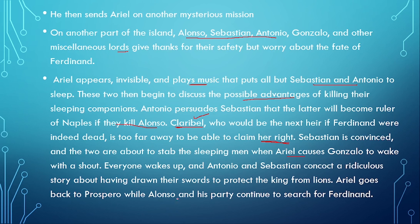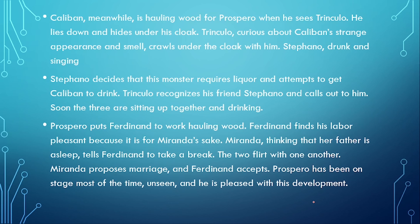Ariel goes back to Prospero, while Alonzo and his party continue to search for Ferdinand. Alonzo's son was Ferdinand and these people are looking for him, hoping he might be alive, while the rest believe he has died.